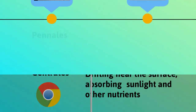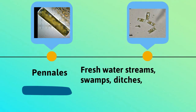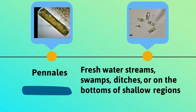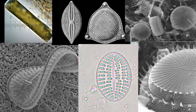Pennales tend to be elongated. They also live in freshwater, streams, swamps, ditches, and in the shallow regions of oceans and estuaries.